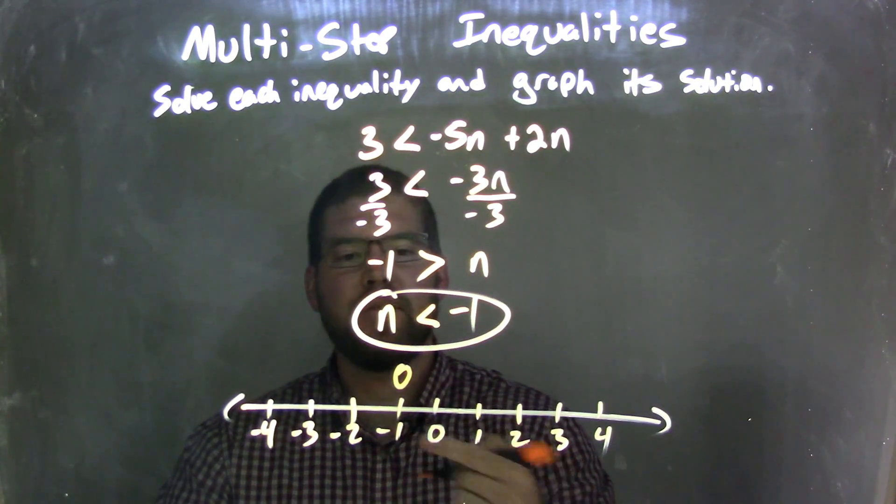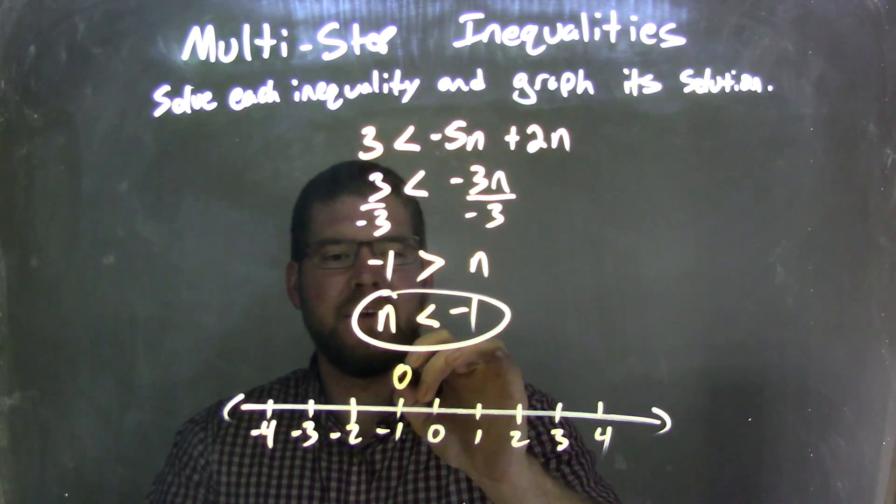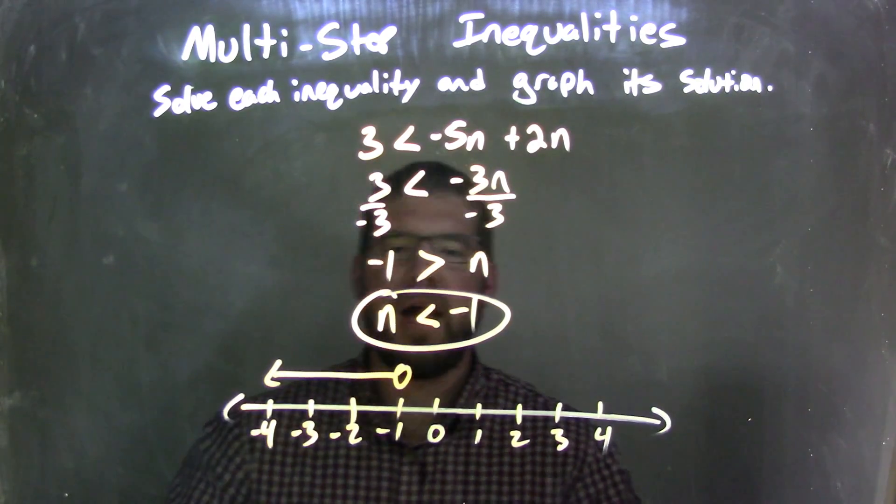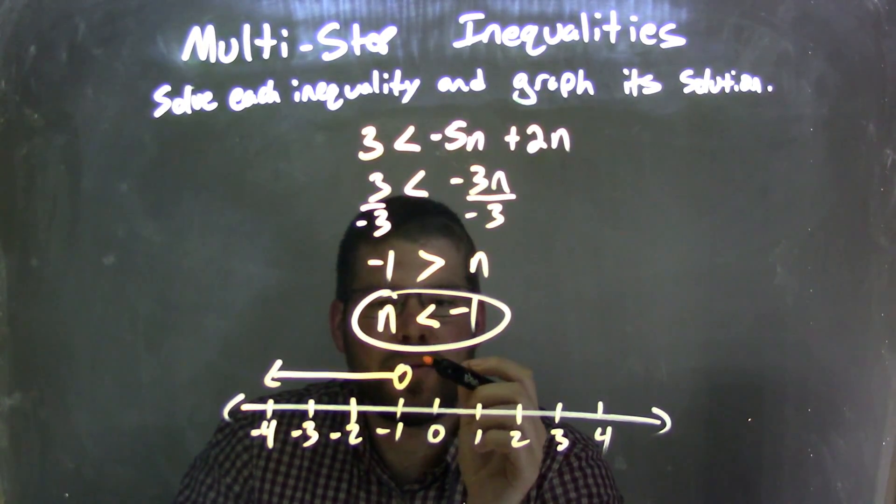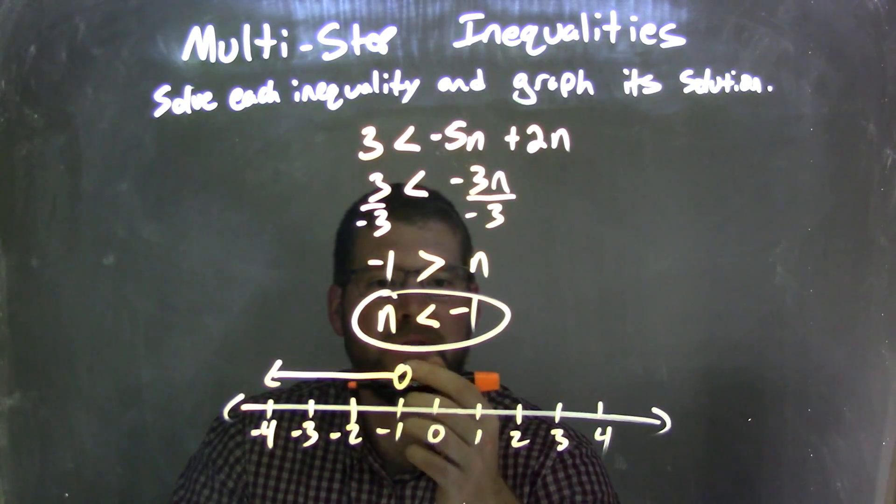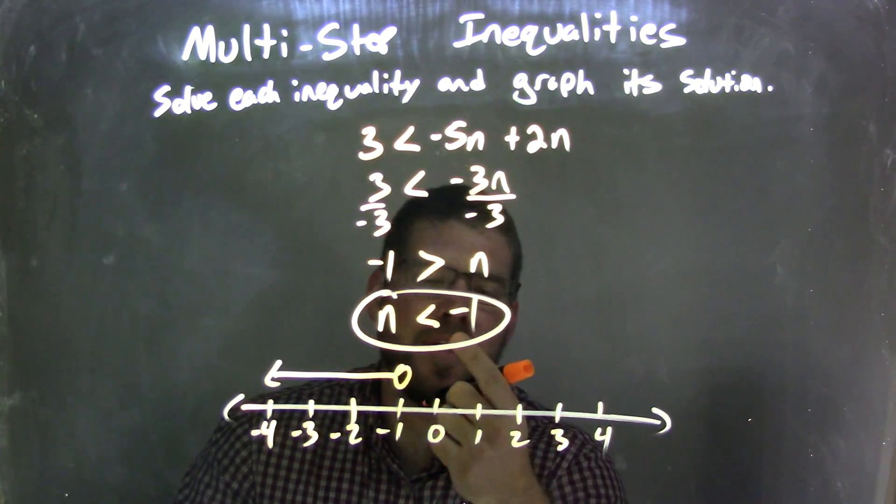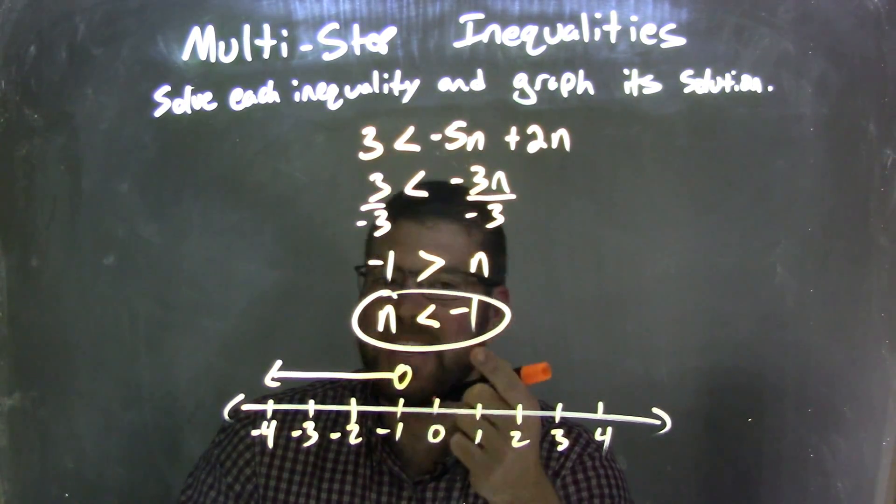And then I shade to the left, because the arrow, right, is less than sign. We shade to the left. So n is less than negative 1. Open circle there, because it's not equal to. And it's less than, so the arrow to the left. And now our graph matches our answer of n is less than negative 1.